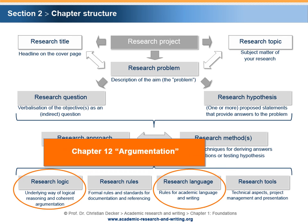In Chapter 12, based upon previous explications of research logic and research language, the aspects and techniques of argumentation are discussed. Thereby, the chapter aims at creating a nexus between logical reasoning, academic language and writing, as well as referencing. Although argumentation is rather an art than a science, the chapter provides a structured entry point for your own practice.